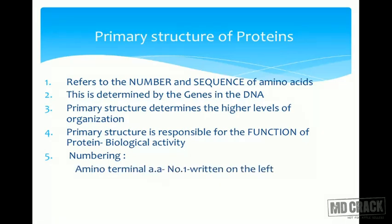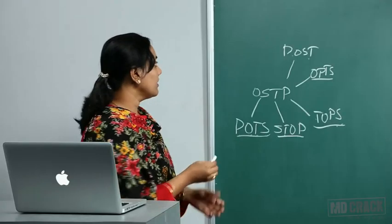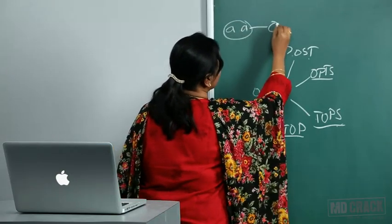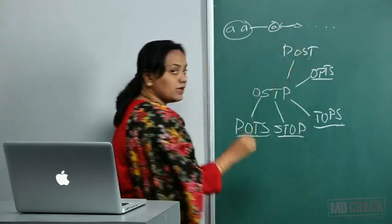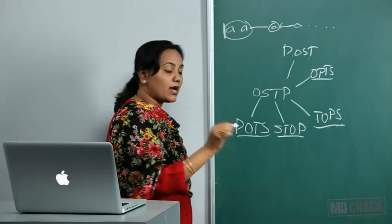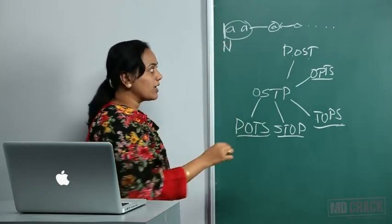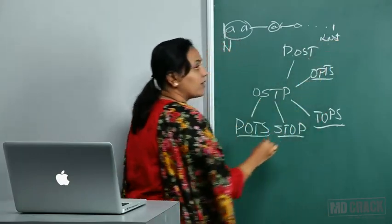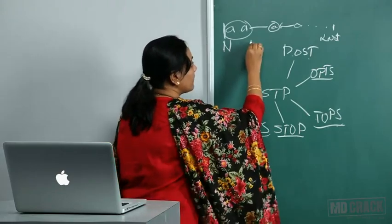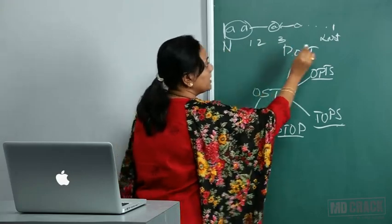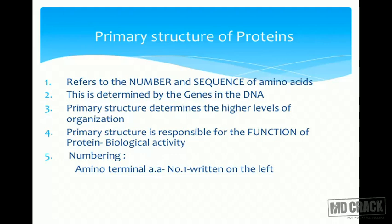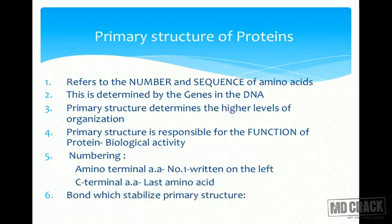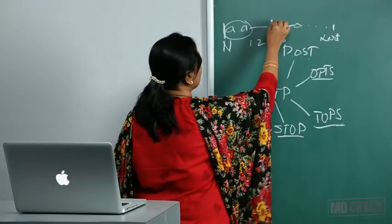In the numbering of the primary structure, the amino terminal is the first amino acid and the carboxy terminal is the last amino acid. This is by convention. All amino acids in a protein are numbered from the amino terminal to the carboxy terminal, and this convention is followed everywhere in the world.